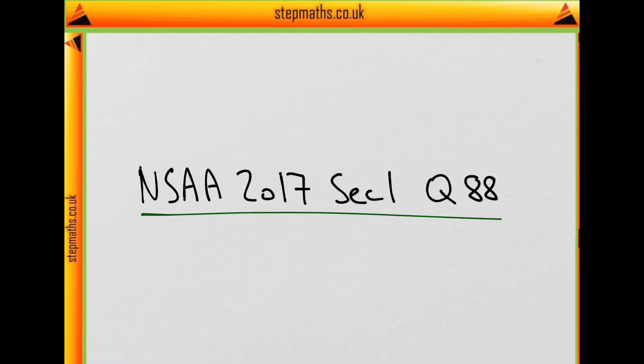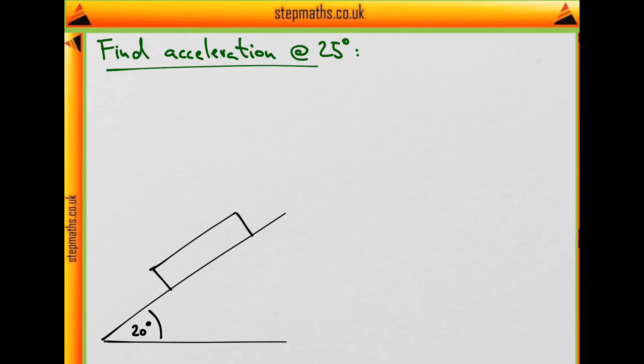So this is question 88 from the 2017 paper. In this question, we have a book on an inclined plane, which at first is at 20 degrees to the horizontal.